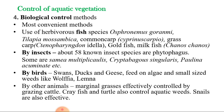Other animals can also be used to control weeds. For example, marginal grasses are effectively controlled by grazing cattle. Crayfish and turtles also control aquatic weeds, and snails are also effective for controlling weeds.